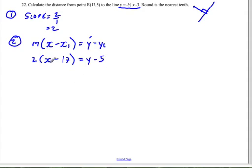So our equation is going to be 2x, and 2 times negative 17 is negative 34, and y minus 5. And so if we put this into standard form, we're going to subtract y from both sides and add 5.